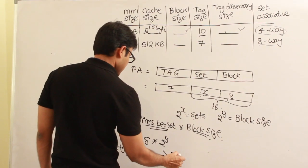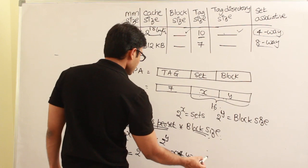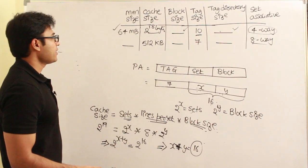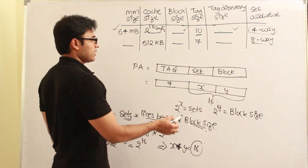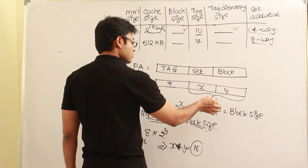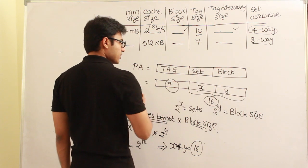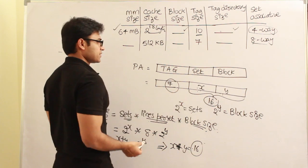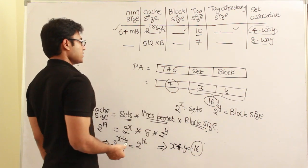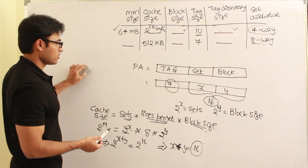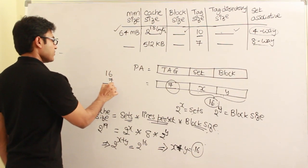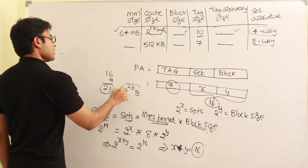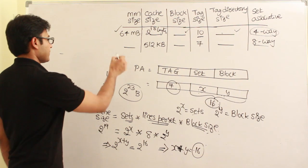So X plus Y combined is 16 bits. The tag is 7 bits, so the total physical address size is 16 plus 7 equals 23 bits. Therefore, the physical address is 2^23 bytes, which is 8 MB — that is the main memory size.